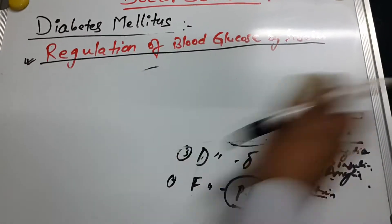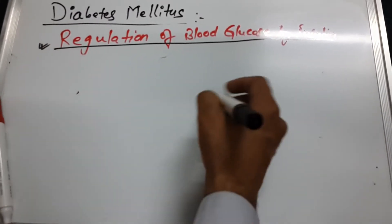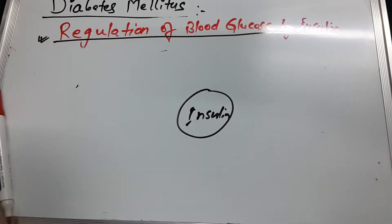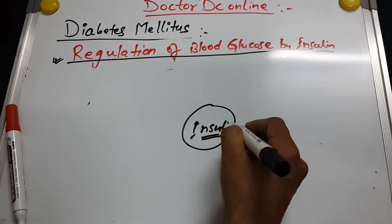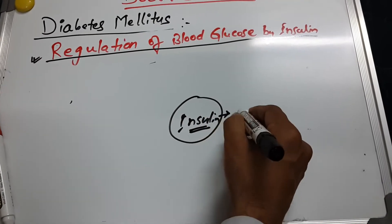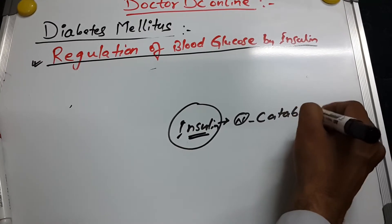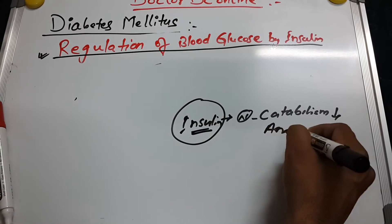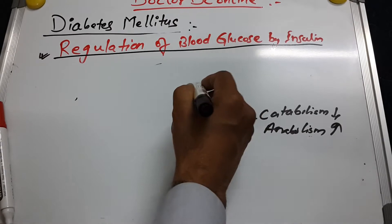Now let's talk about regulation. The main actor here is insulin. We need to understand the mechanism of action of insulin and its main functions. In normal conditions, insulin decreases catabolism and increases anabolism — that is its primary function.